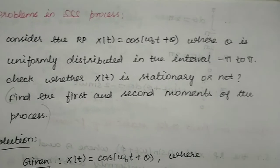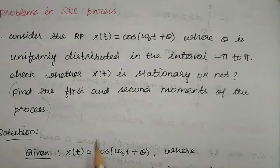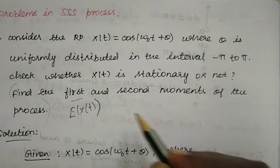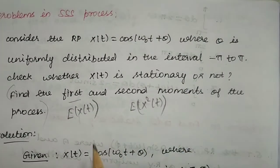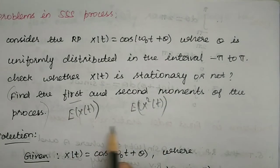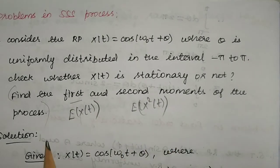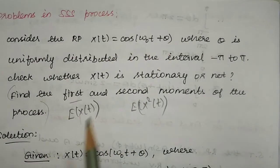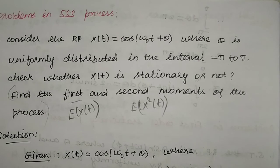Now for the other part of the question — find the first and second moments. The first moment is the mean: E[x(t)]. The second moment is E[x²(t)]. We have already found the mean and variance, so these are the same calculations we already did. The first and second moments follow directly from the stationarity proof.